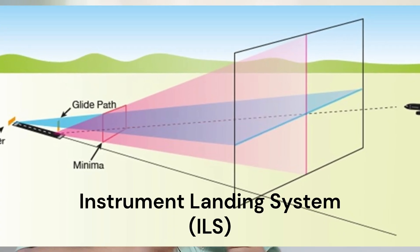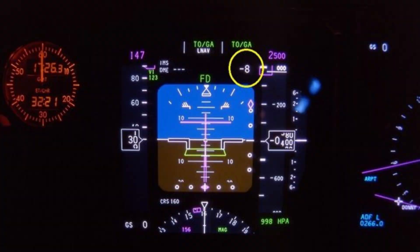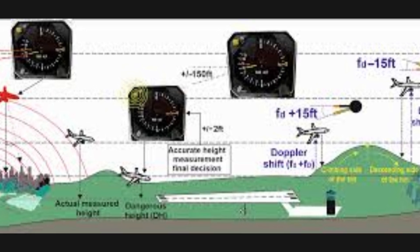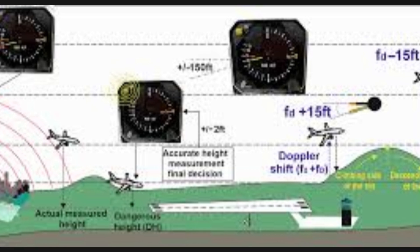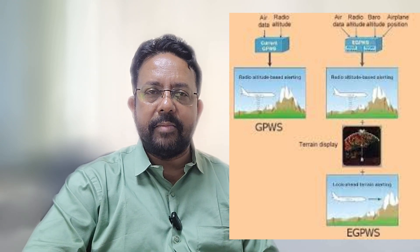Above ground level altitude is the aircraft's height above the ground. While an aircraft holds a specific MSL altitude, the above ground level altitude will vary depending on the elevation of the terrain it is flying over. All aircraft are fitted with a radio altimeter — it works on the principle of radar — which warns pilots if terrain comes up within a certain limit. This system is known as GPWS, or Ground Proximity Warning System, and that's what you heard at the start of this video.